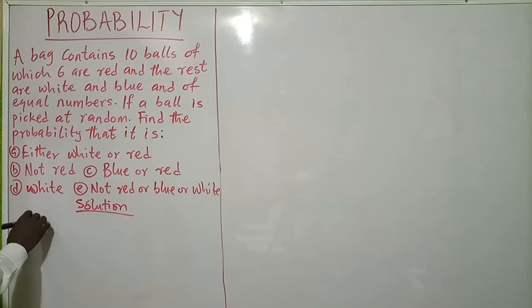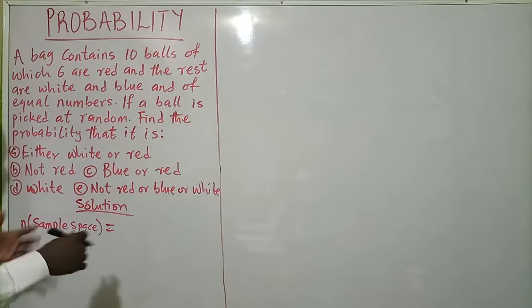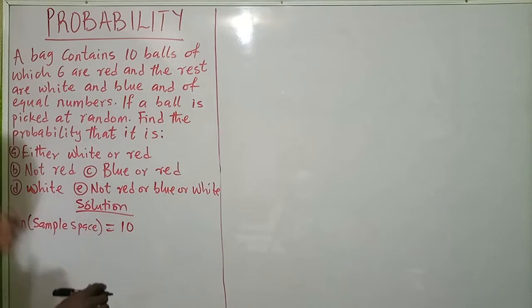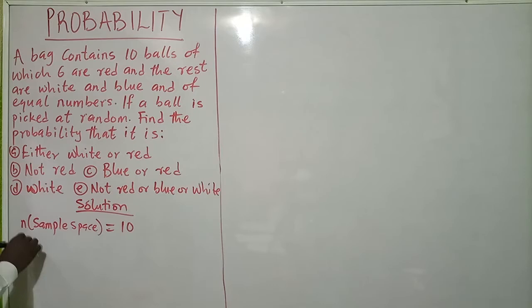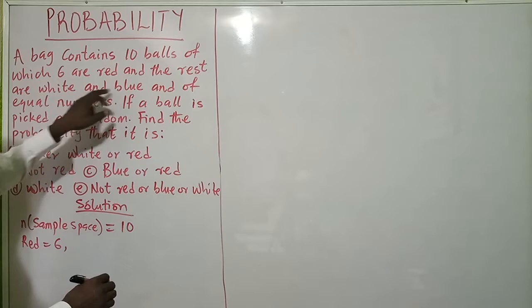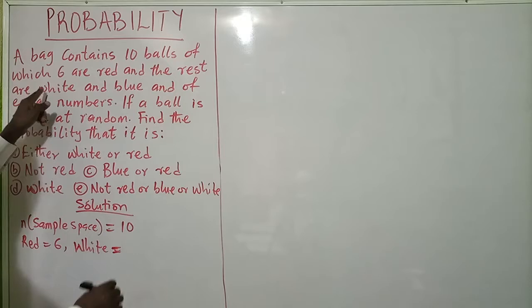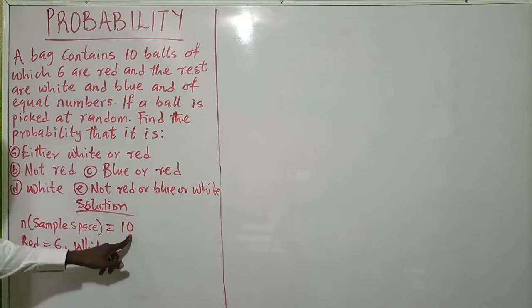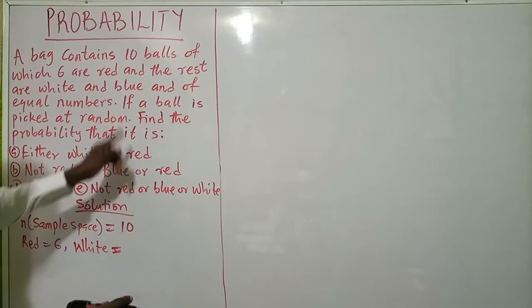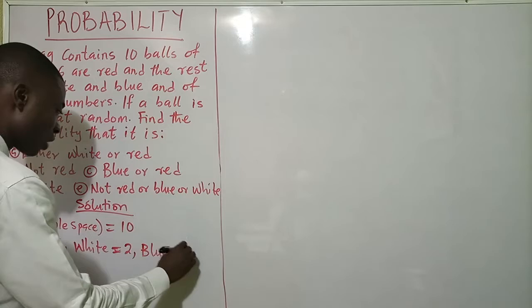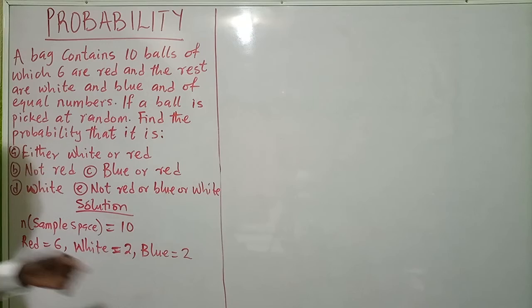So the number of the sample space, or possible outcomes — remember, sample space means possible outcomes. The bag contains 10 balls, so the total is 10. The colors: six are red. The rest are white and blue in equal numbers. Removing six from ten leaves four, and dividing four by two gives us two whites and two blues. Six plus two plus two equals ten.